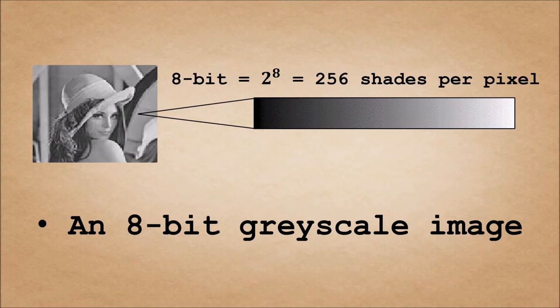For each pixel, however, there can be many shades of grey. This is determined by how detailed the image is. For example, if it is an 8-bit grayscale image, there will be 2 to the power of 8 or 256 shades of grey that can be represented in each pixel. Hence, the larger the number of bits, the more shades of grey that can be represented in each pixel, resulting in a better detailed image.